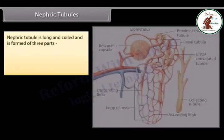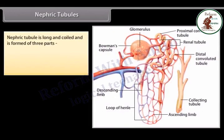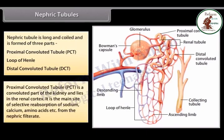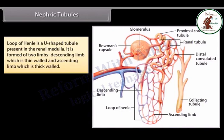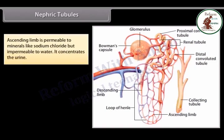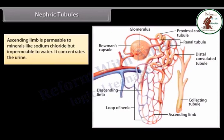The nephric tubule is long and coiled and is formed of three parts: the proximal convoluted tubule (PCT), the loop of Henle, and the distal convoluted tubule (DCT). The PCT lies in the renal cortex and is the main site of selective reabsorption of sodium, calcium, amino acids, etc. from the nephric filtrate. The loop of Henle is a U-shaped tubule present in the renal medulla, formed of a thin-walled descending limb and a thick-walled ascending limb. The descending limb is permeable to water but impermeable to minerals like sodium chloride, while the ascending limb is permeable to minerals but impermeable to water.